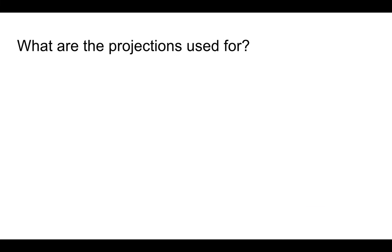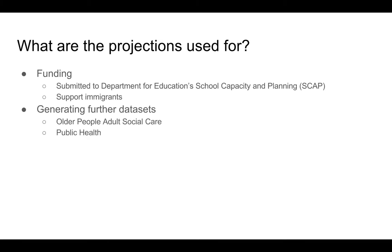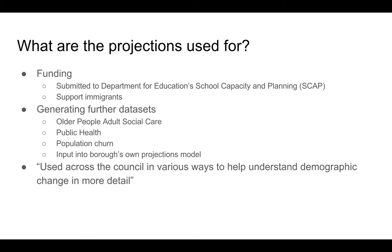So, what are the projections used for? The school roll projections are submitted to the Department for Education School Capacity and Planning Survey (SCAP), which is the basis of funding new schools. In one borough, projections were used to apply for funding to support large numbers of immigrants. The projections form the basis of generating many further datasets such as older people, adult social care, public health, population churn, and input into viral zone projection models. The births, deaths, and migration projections were used for understanding demographic change in more detail.